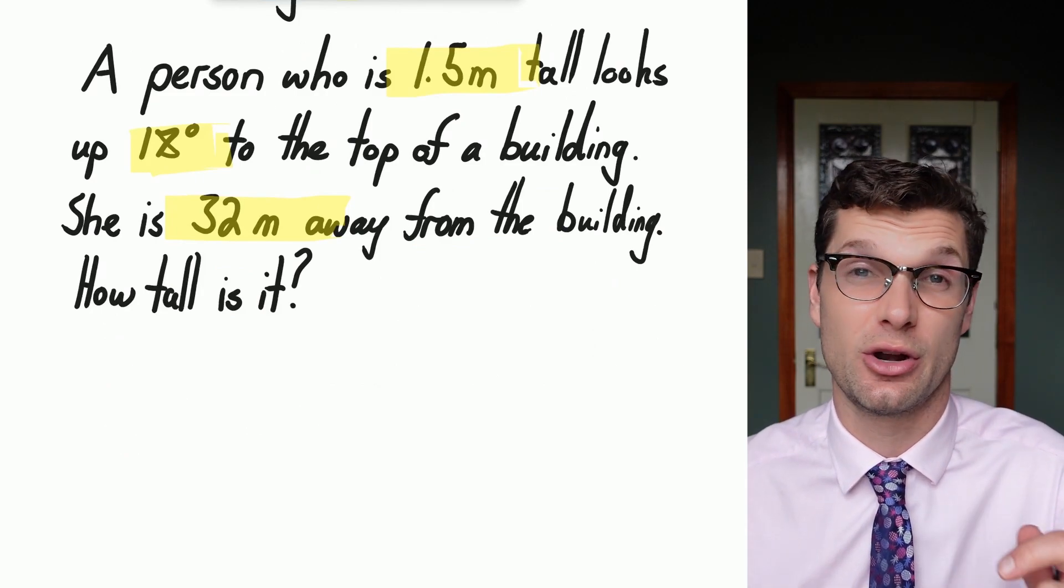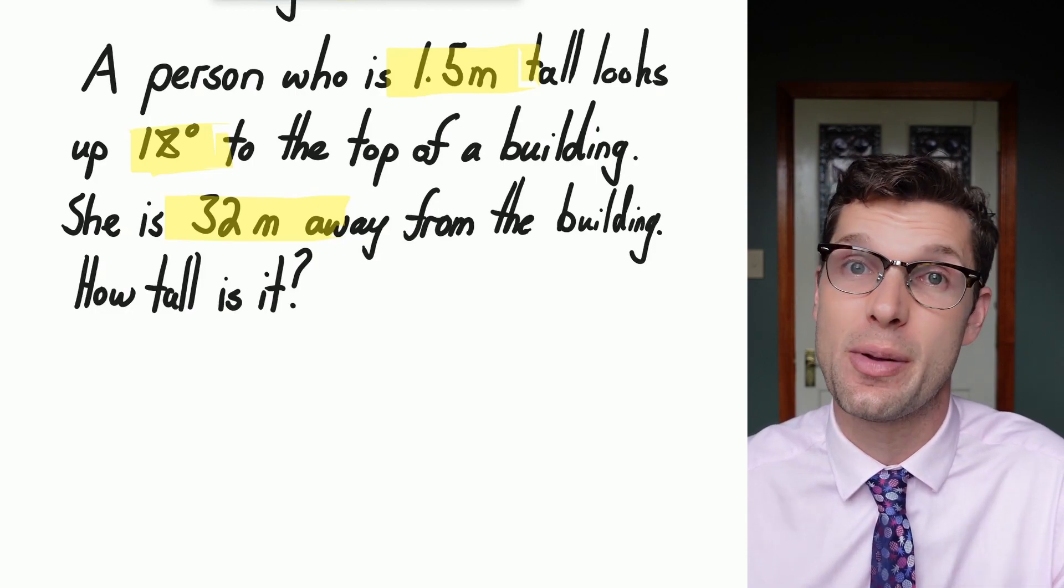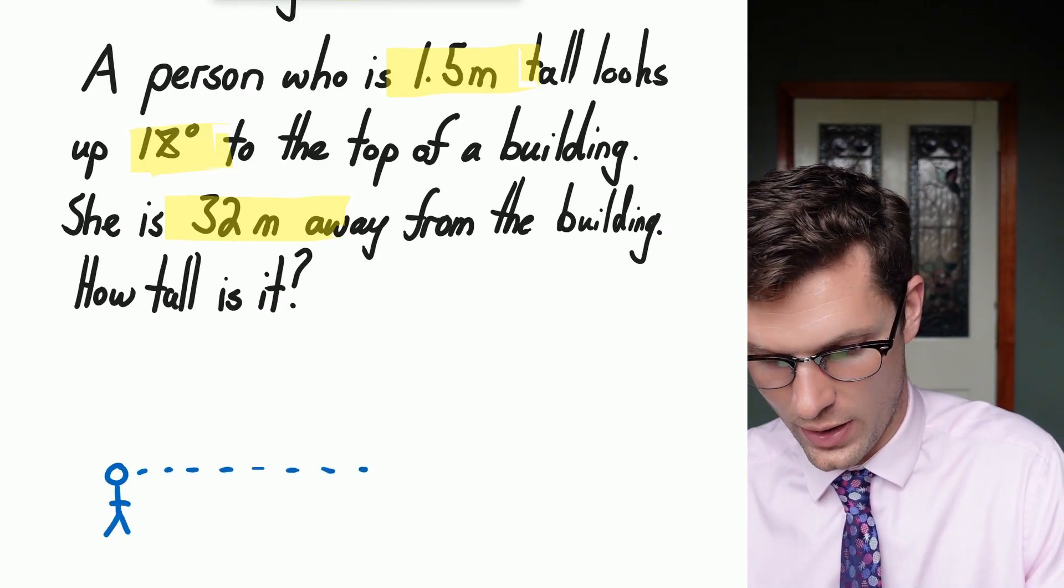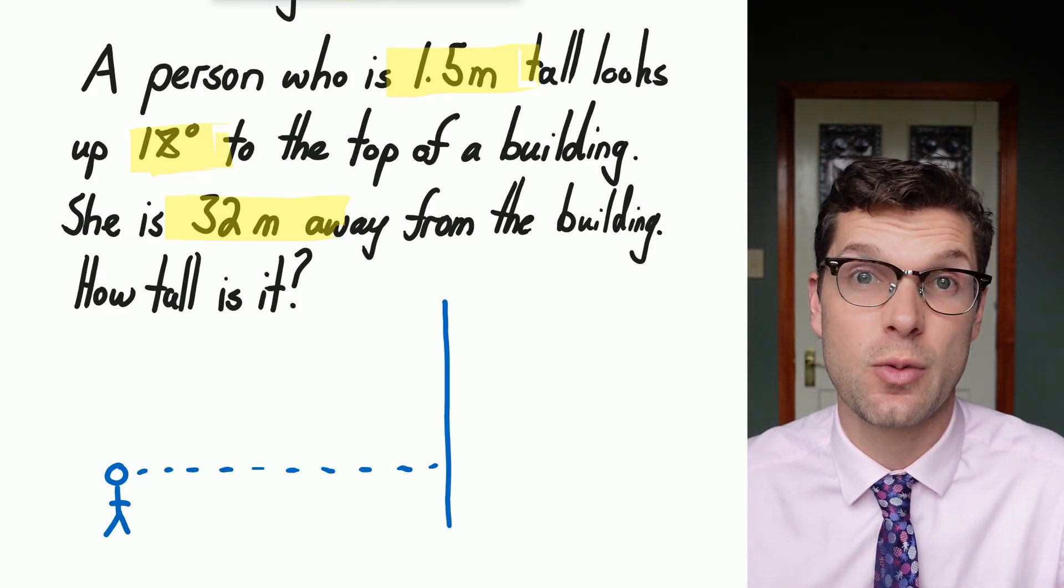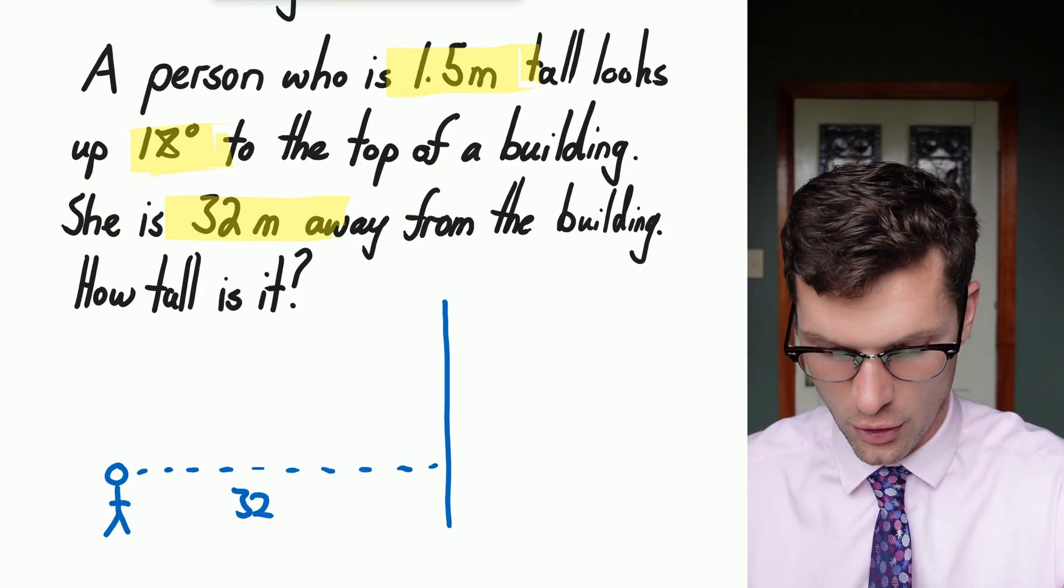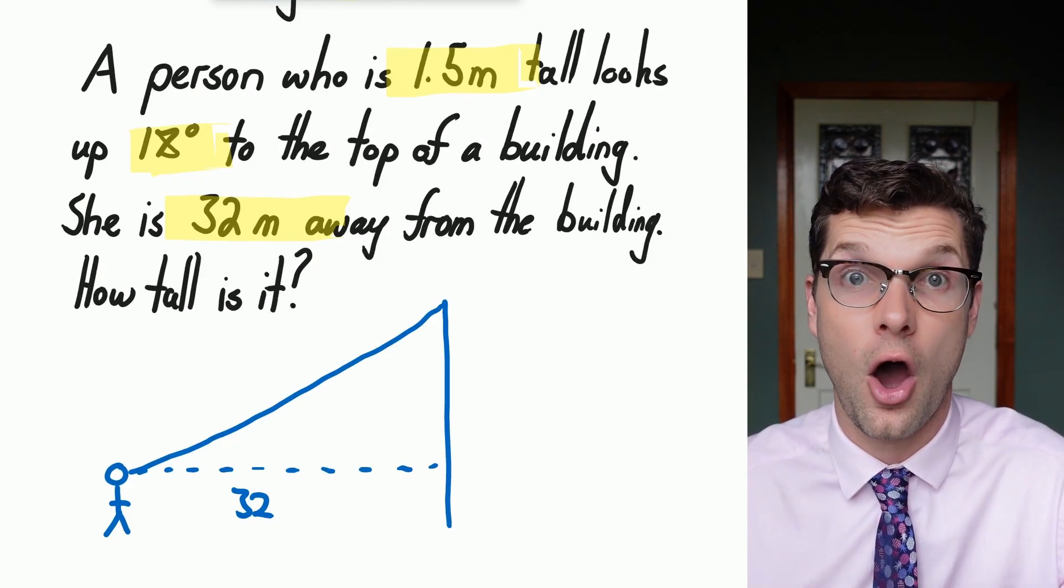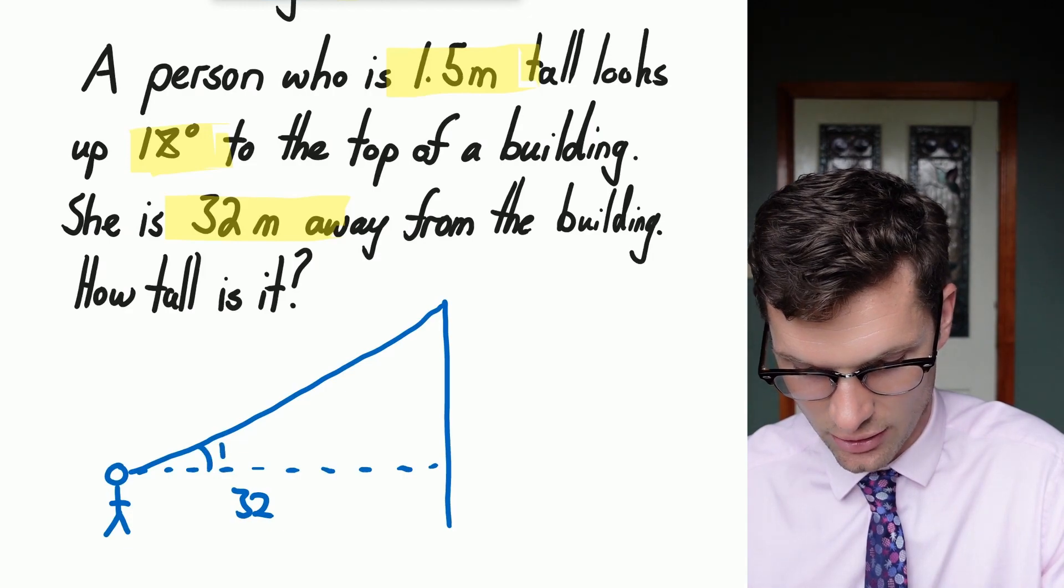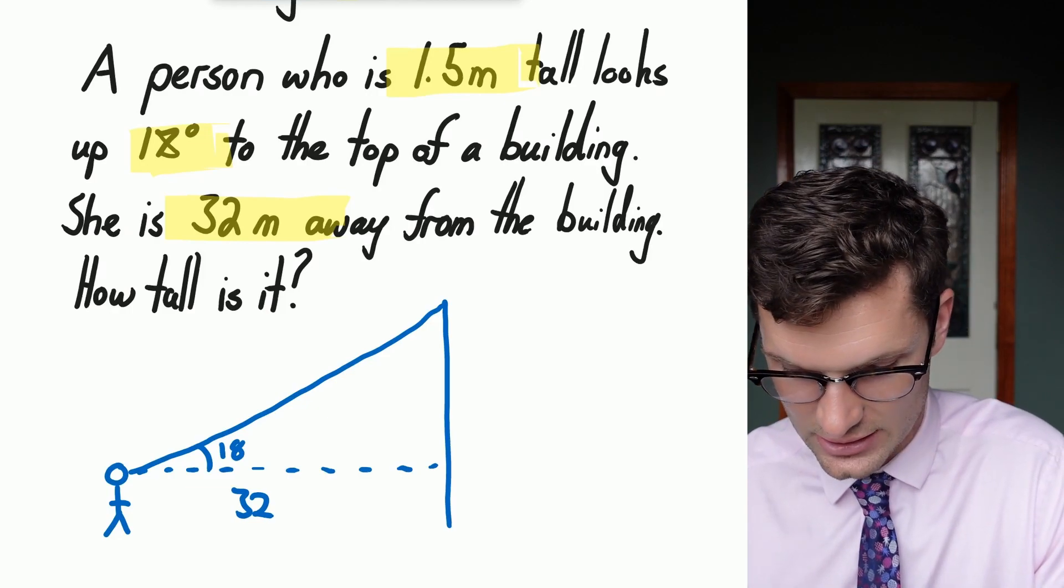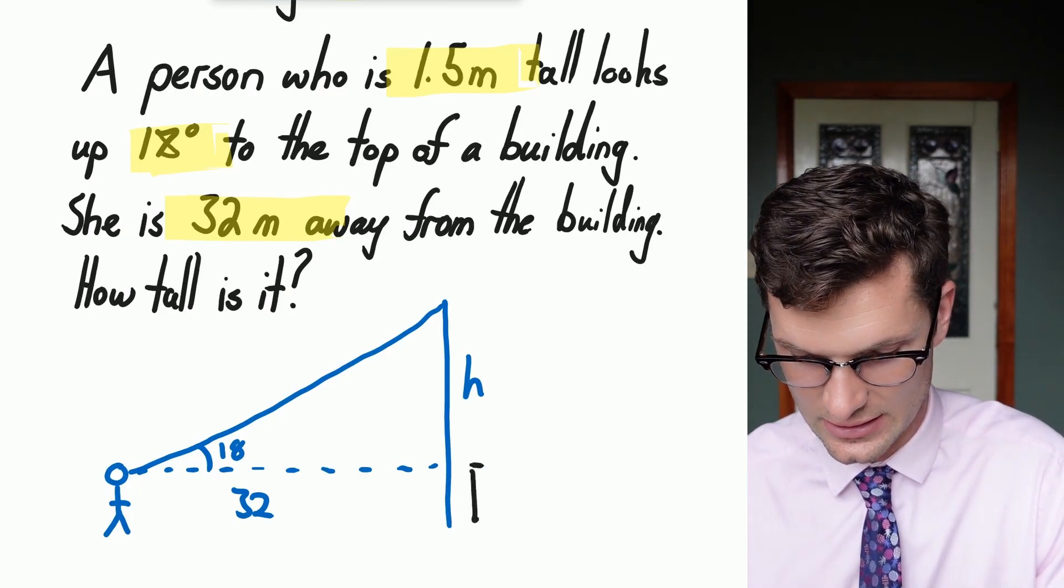So when we draw this out, I do want you to put a little person there, because it'll help you remember that we have to add that 1.5 to the building's height at the very end. So we've got this person who's looking out all the way to a building that's up here. That distance we're away is 32 meters, so I'm going to put that in straight away. And now to complete my triangle, I go from the top all the way back down to my eyesight. The angle of elevation, or from my eyesight up to the top of the building, is 18 degrees. So now I've got all the information I need. The height's going to be over here, and just at the end, we need to add that 1.5 meters.